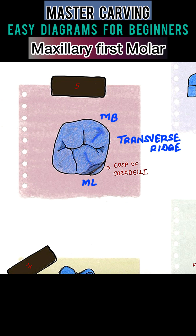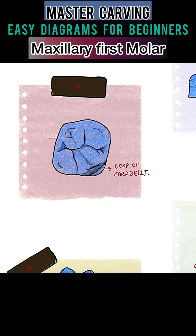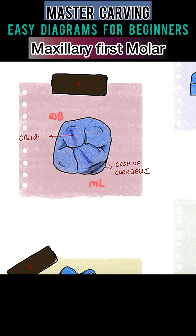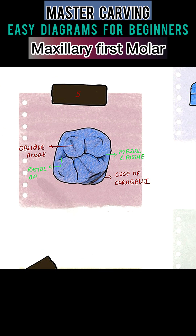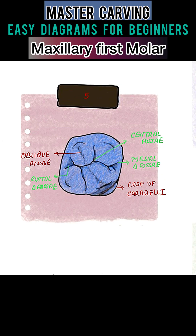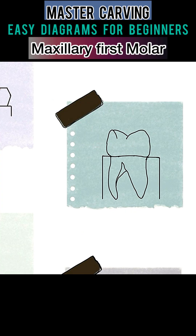Mark the triangular ridges of each cusp, which form the transverse ridge — a combination of mesiobuccal and mesiolingual ridges — and the oblique ridge, which connects the mesiolingual and distobuccal ridges. Then add the central pit, and the mesial and distal pits. After finishing the crown part, we will move towards root carving.